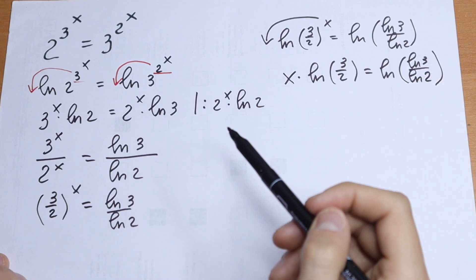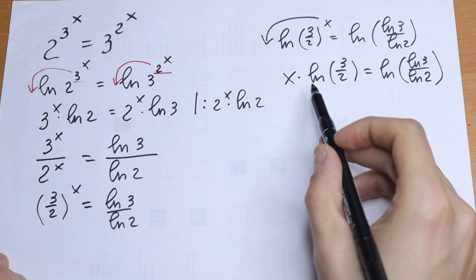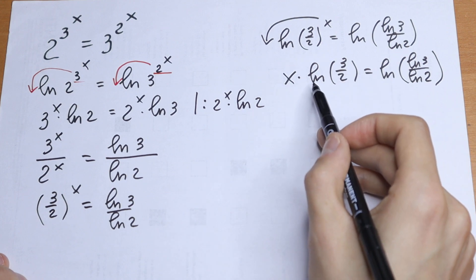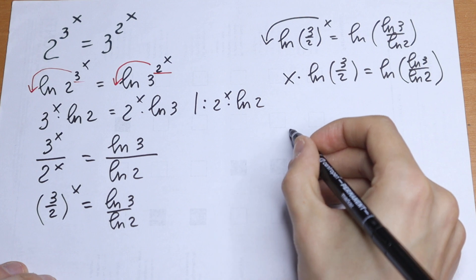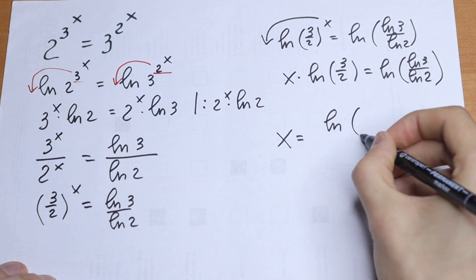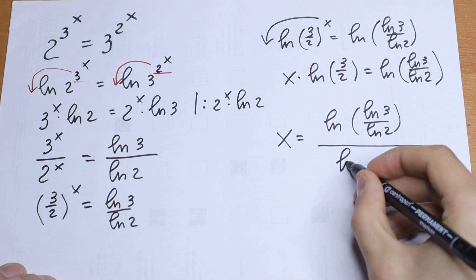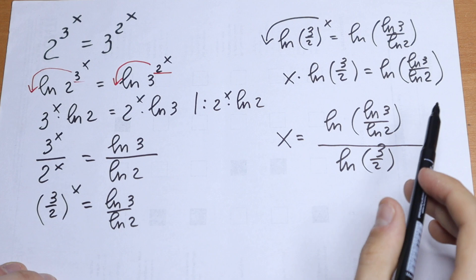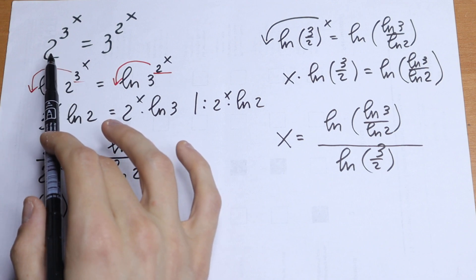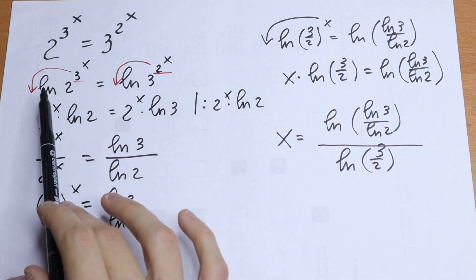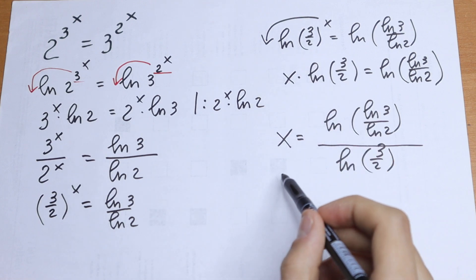Nothing hard — just step-by-step tricks and log properties. We just need x on the left, so we divide both sides by natural log of 3 over 2. As a result, x equals natural log of natural log 3 over natural log 2, all over natural log of 3 over 2. This exponential equation looks hard because we have power upon power, but using natural log properties, dividing and simplifying gives us the answer.